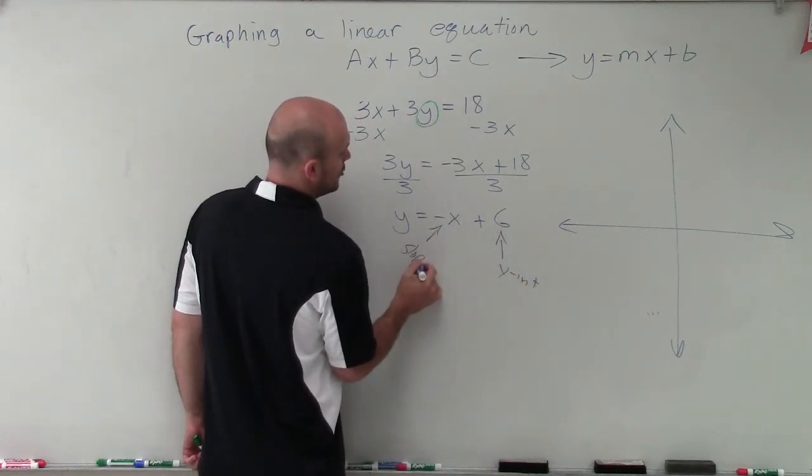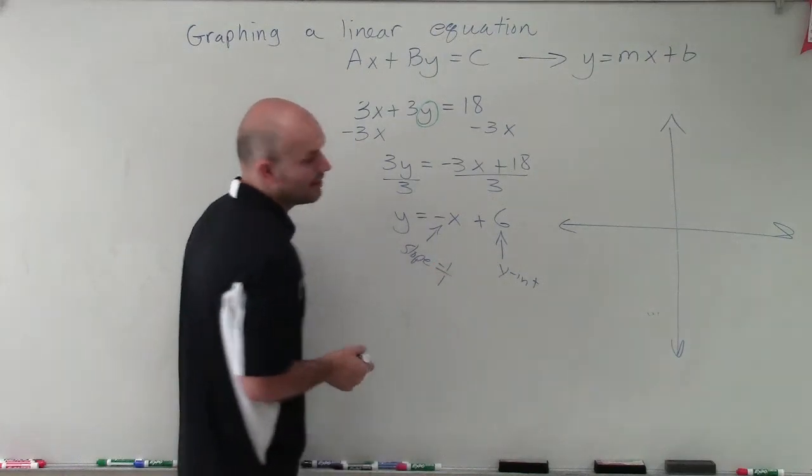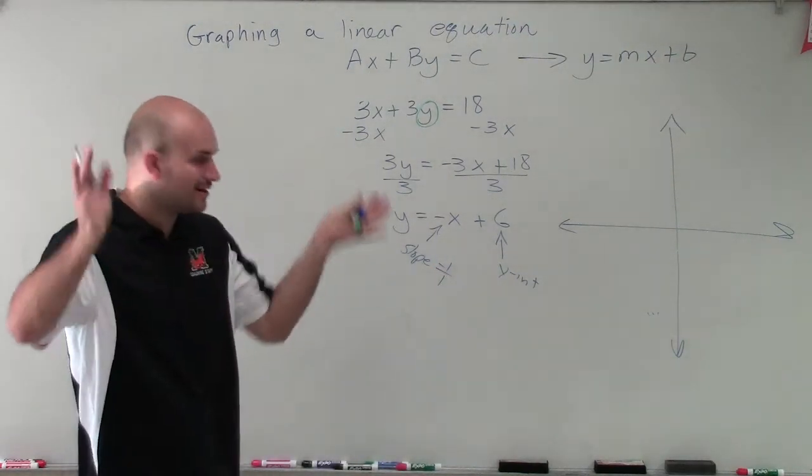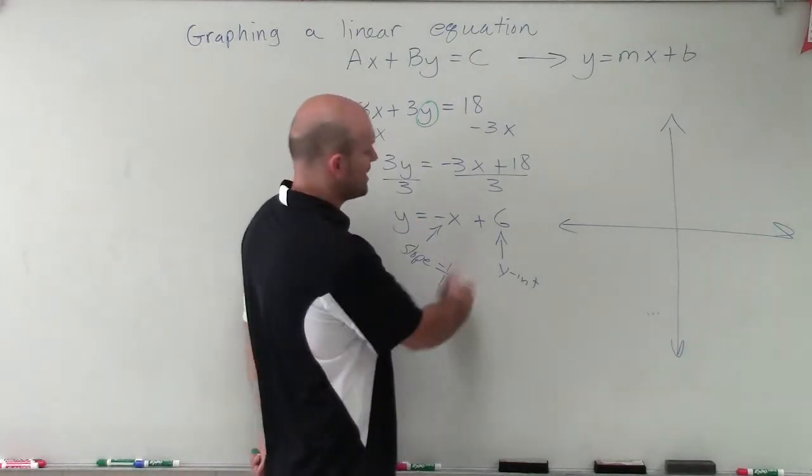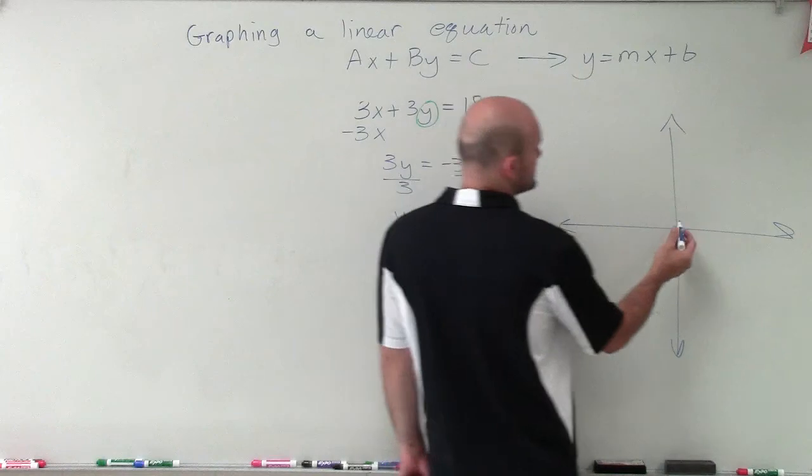And my slope, we can write as a fraction of negative 1 over 1. You could also write as 1 over negative 1. We already went over all that. But you can see my slope is negative 1, and we'll write it as a fraction of negative 1 over 1. So first thing I'm going to do is go up to 6.